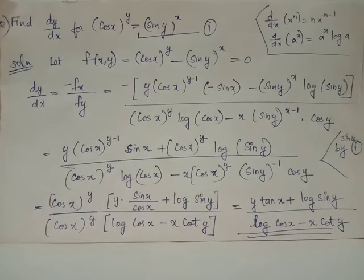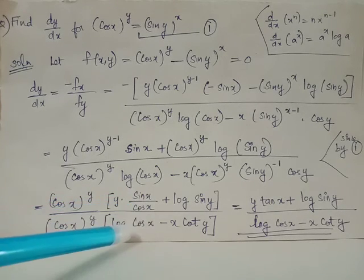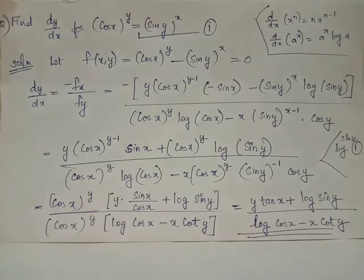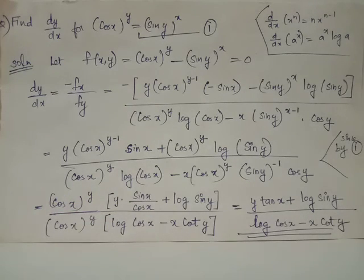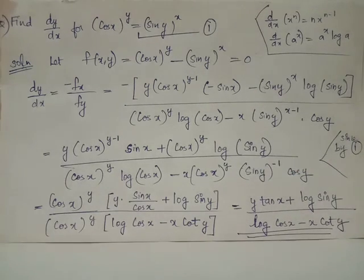Now cos x whole raised to y is common to both terms in the numerator as well as the denominator and it can be cancelled. The remaining terms give us the final result: dy by dx equals y tan x plus log sin y, upon log cos x minus x cot y, using the relations sin x over cos x equals tan x and cos y over sin y equals cot y.